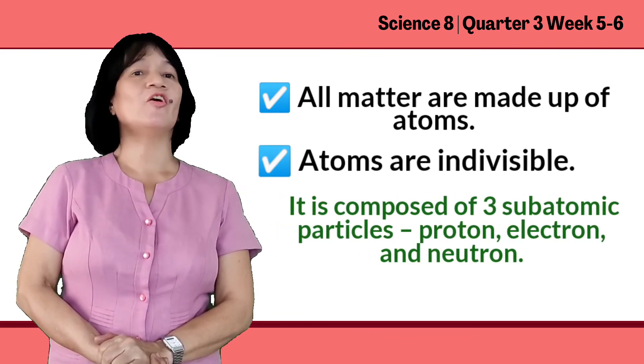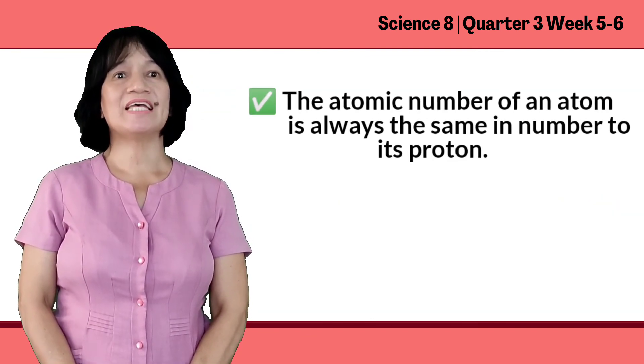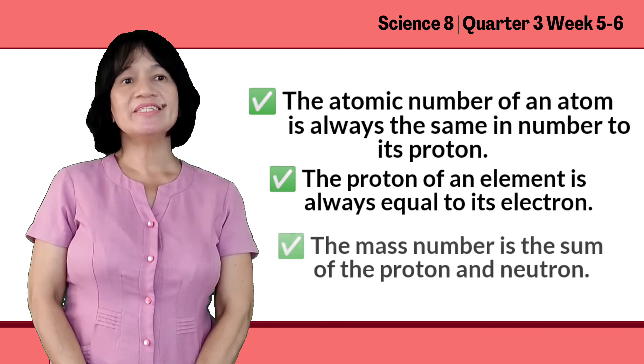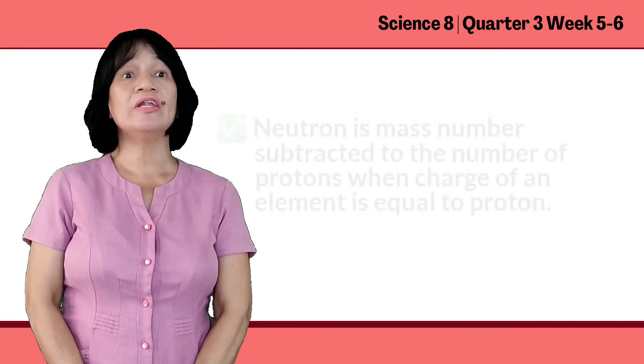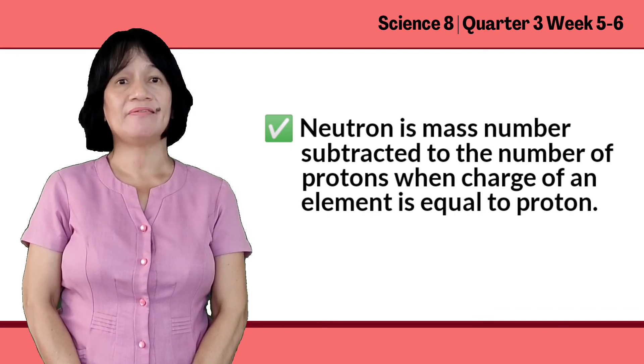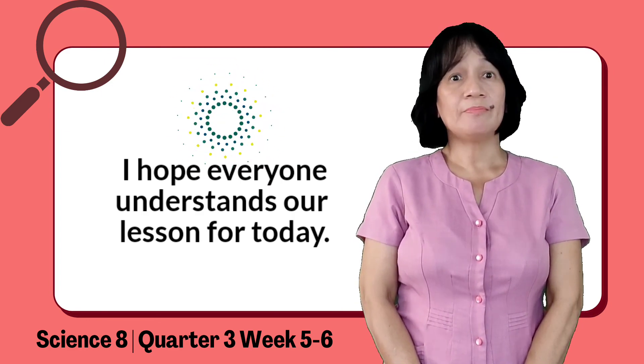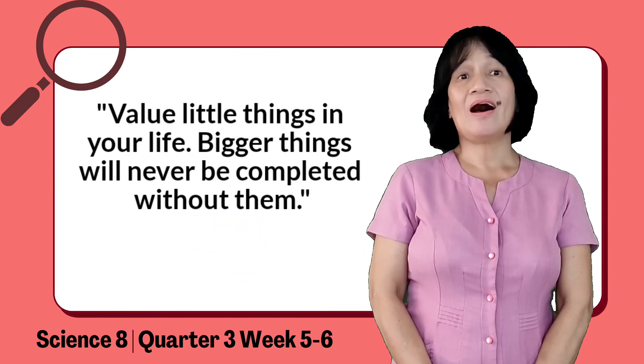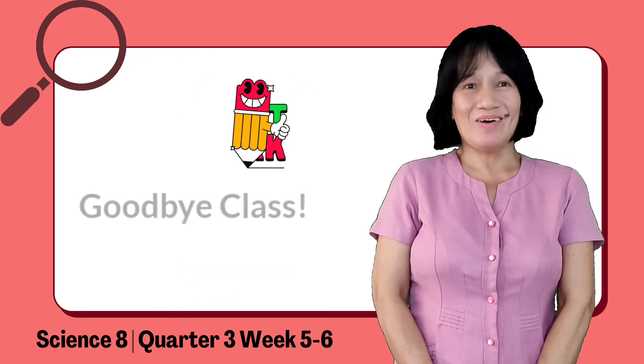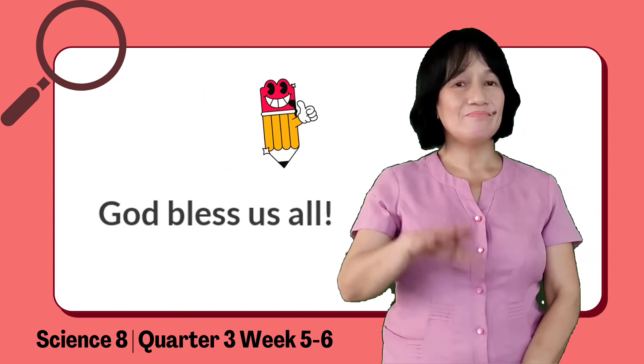To wrap up this lesson, always remember that all matter is made up of atoms. Atoms are indivisible. They are composed of three subatomic particles: the proton, electron, and neutron. The atomic number of an atom is always the same as the number of protons. The number of protons of an element is always equal to its electrons. The mass number is the sum of the protons and neutrons. Neutrons equal mass number minus the number of protons. The net charge of an element is equal to protons minus electrons. I hope everyone understands our lesson for today. But before we end, remember that without little things in your life, bigger things will never be completed without them. Goodbye class, have a great day and God bless us. Bye bye.